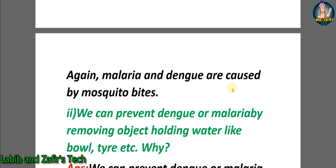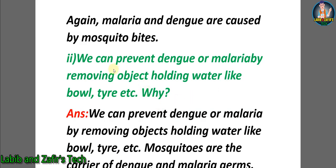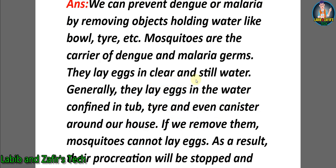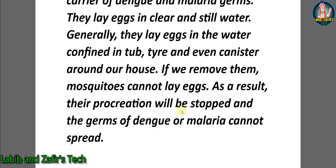Question two: how can we prevent dengue and malaria by removing objects holding water like bowls, tires, etc.? Answer: mosquitoes are the carriers of dengue and malaria germs. They lay eggs in clear and still water — generally in water confined in tires and containers around our house. If we remove them, mosquitoes cannot lay eggs. As a result, their procreation will be stopped and the germs of dengue or malaria cannot spread.